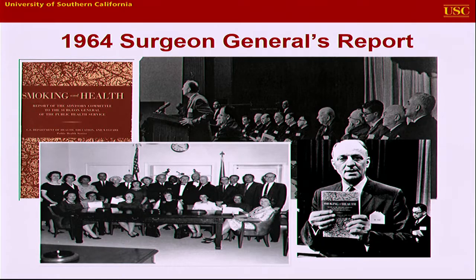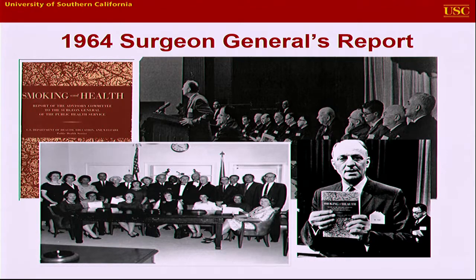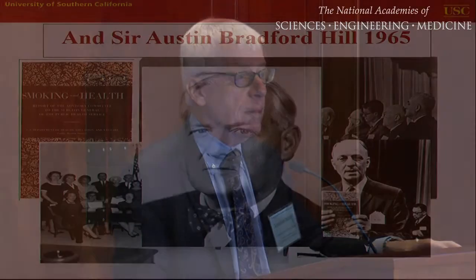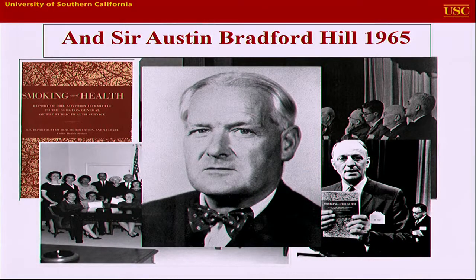There were a couple of crystallizing events. One was the 1964 Surgeon General's report on smoking and health, done by an advisory committee. They essentially did a massive systematic review, wrote a 330-page report, elaborated causal criteria that remain in use, and reached the conclusion that smoking caused lung cancer — stated in men, because the data for women were quite limited at the time. And then in 1965, Sir Austin Bradford Hill published his widely cited paper with very similar guidelines for causal inference.